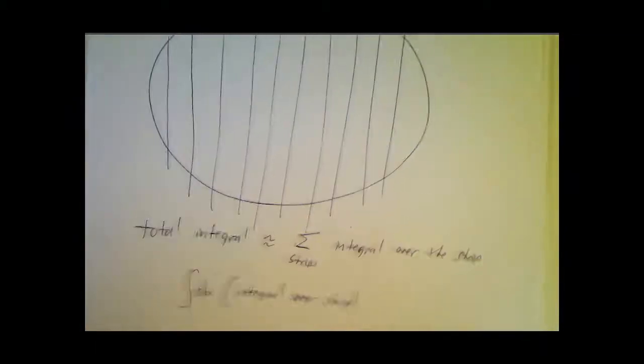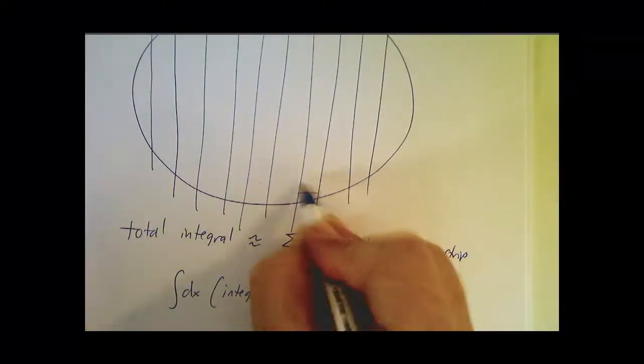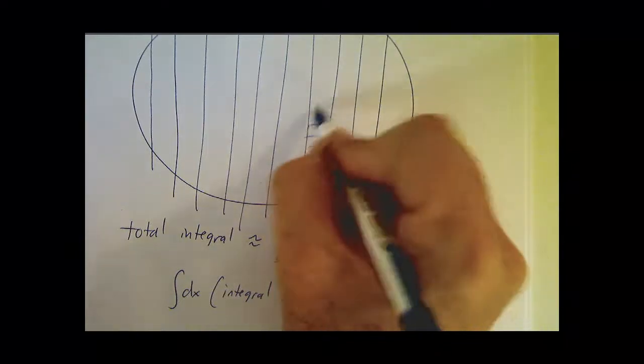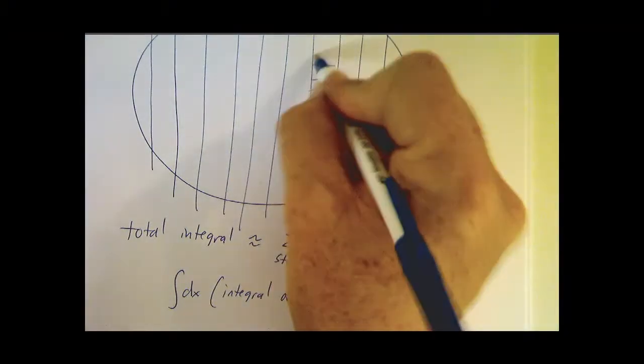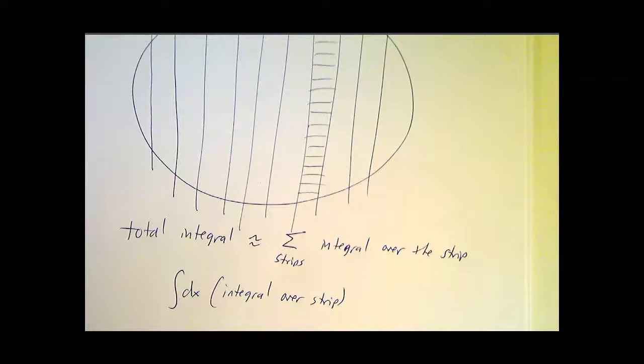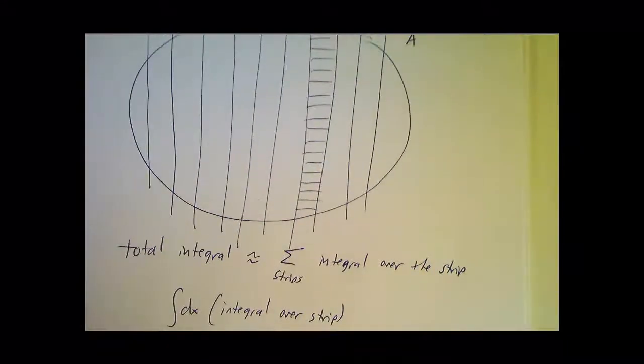But how do you get an integral over the strip? Well, you chop the strip into pieces. Into little boxes and you add up all the little boxes.